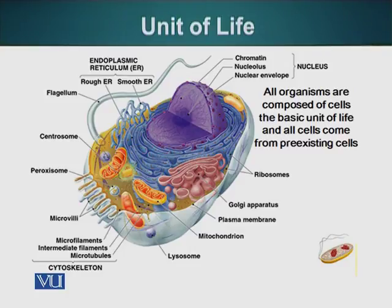The cytoskeleton is composed of three different types: microfilaments or actin filaments, microtubules, and intermediate filaments. We will talk about these three components in more detail later on.